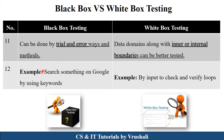A simple example of black box testing is when you search something on Google using keywords — you pass different inputs and Google gives different outputs. White box testing mainly focuses on various loops like while loop, do-while loop, and for loop, and if-else conditions — meaning internal checking of the particular product.